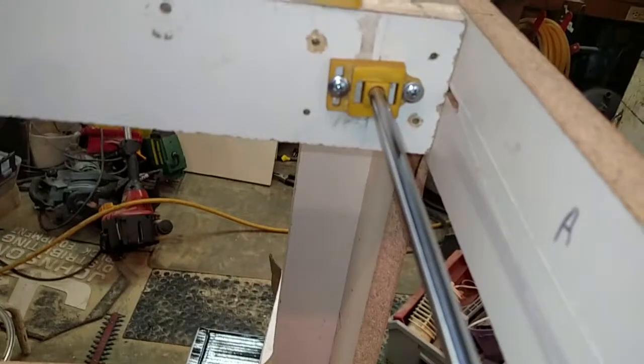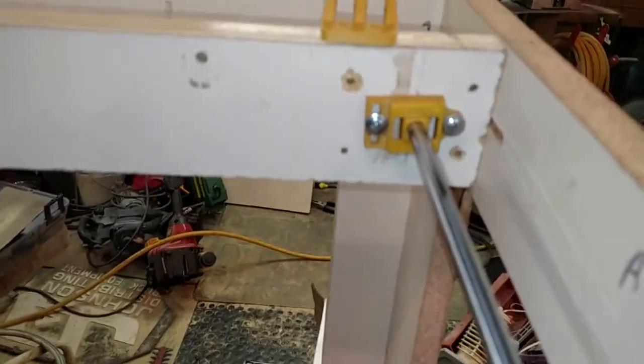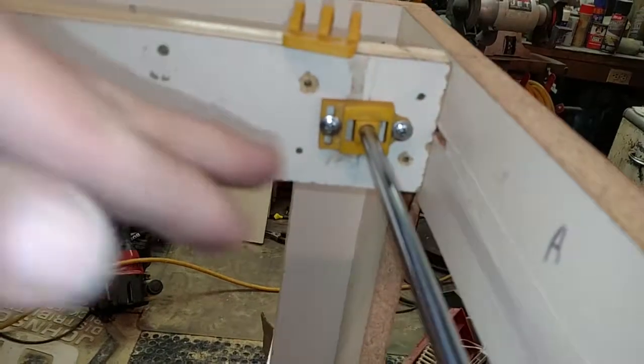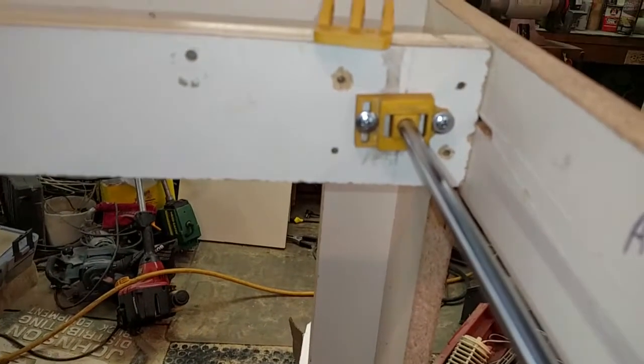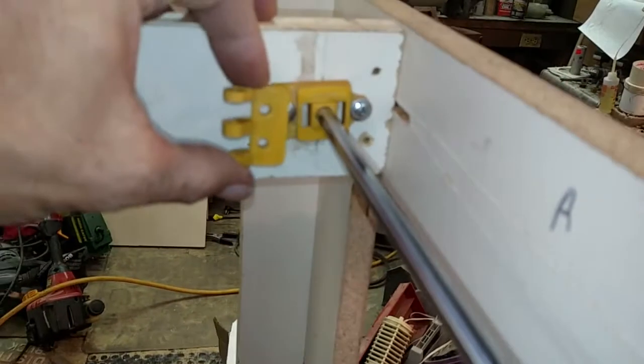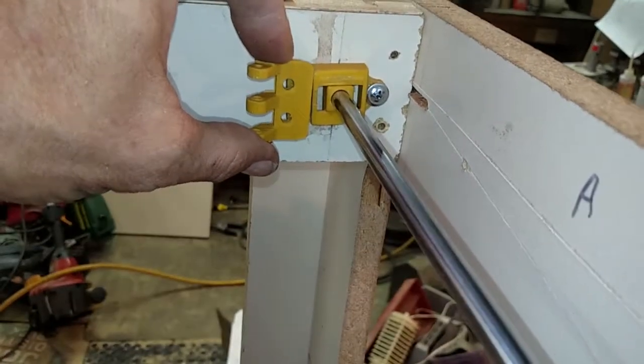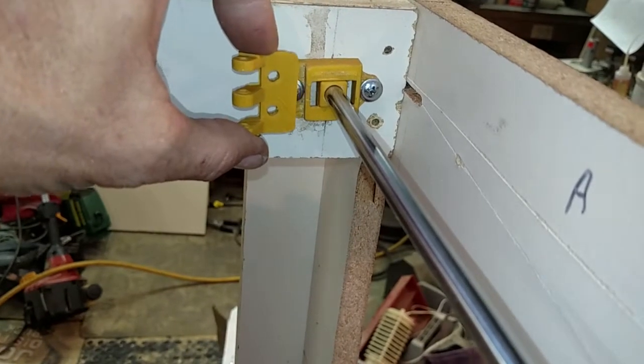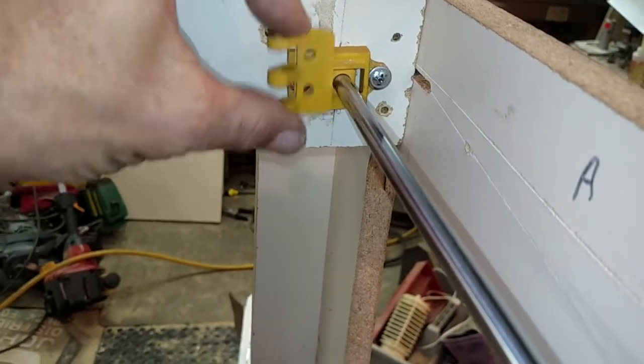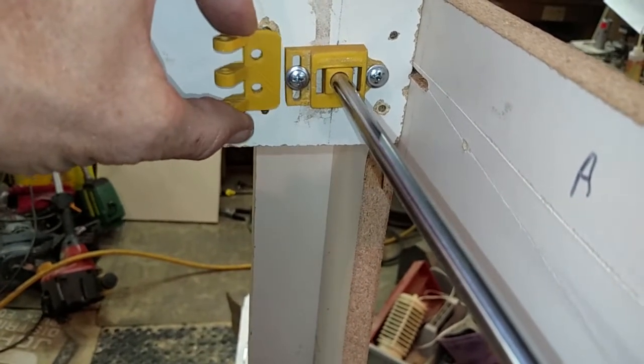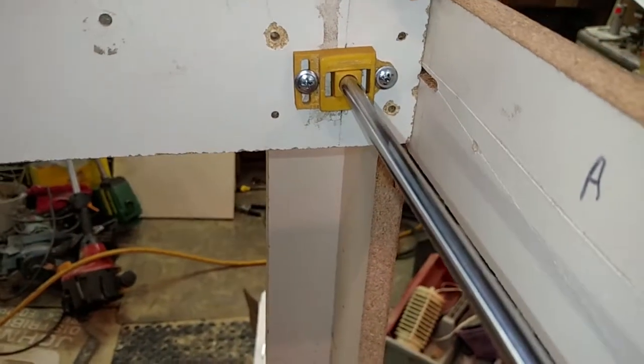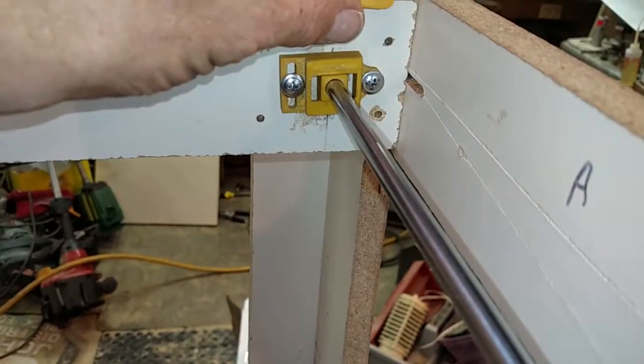So I ran into a new problem. My XY squaring brackets that I designed for fine-tuning the squareness of my Y-linear rods get in the way of the idler pulleys bracket as designed by Tech2C. As a result, I had to redesign the XY squaring bracket to include the idler pulleys in it.